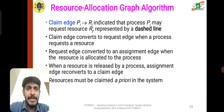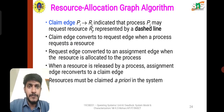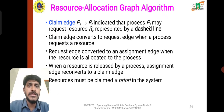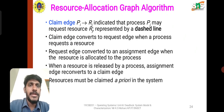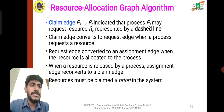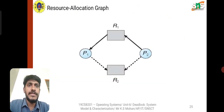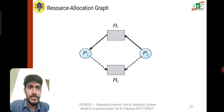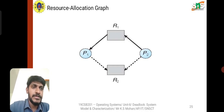In the Resource Allocation Graph, P indicates a process and R indicates a resource. A claim edge represents that a process may request a resource, shown as a dashed line. A claim edge converts to a request edge when the process requires the resource. A request edge is converted to an assignment edge when the resource is allocated to the process. The resource must be claimed a priori in the system. In the resource allocation graph, process P1 is allocated resource R1, and process P2 is allocated to resource R2.